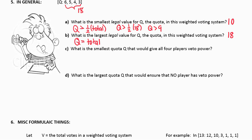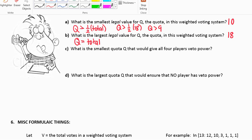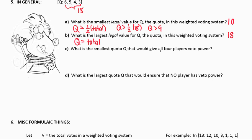The next question says, what is the smallest quota that would give all four players veto power? Now, this is a really tricky question here. I want all four players to have veto power. I like to think of these kind of problems backwards. It's pretty easy to give player one veto power, but it's very difficult for the fewest number of votes, player four, to have veto power. So let's think about player four.